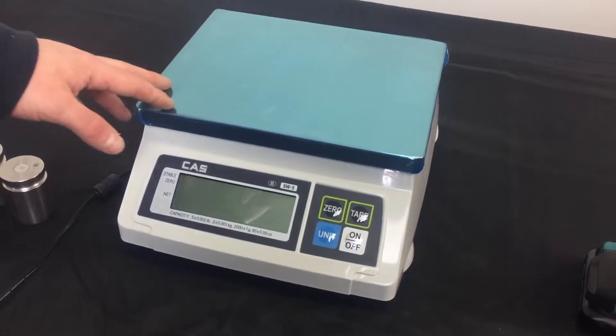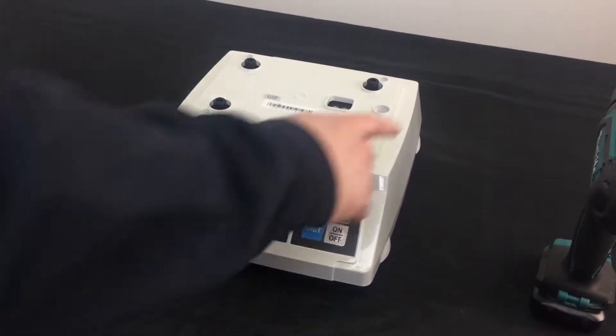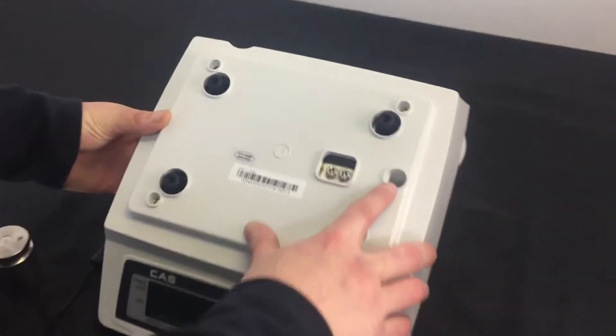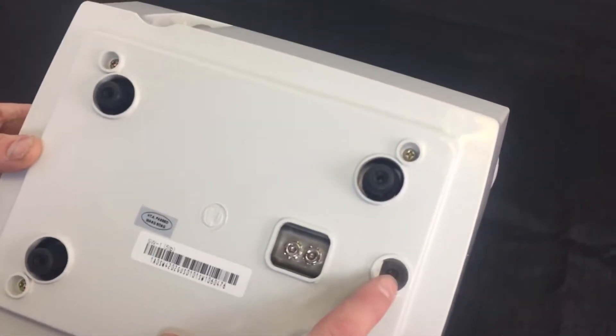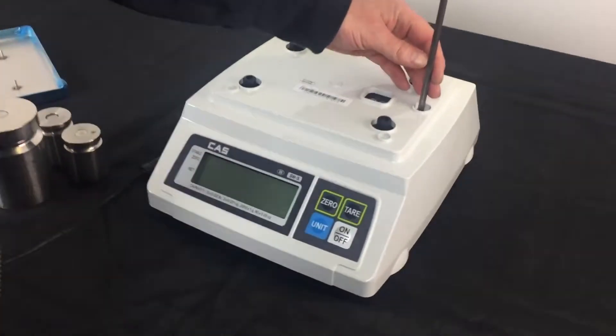Now, the first thing we're going to want to do is remove the platter on the top of the scale just so we can locate inside here in this port. Right here, there's a screw at the bottom. This is to remove the calibration plate, which is located underneath the scale.